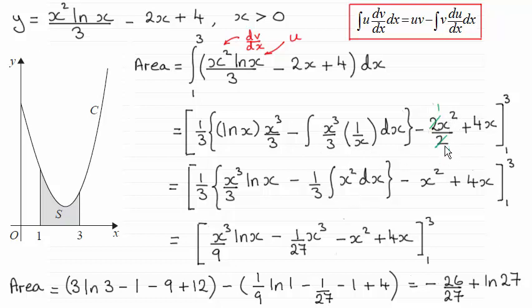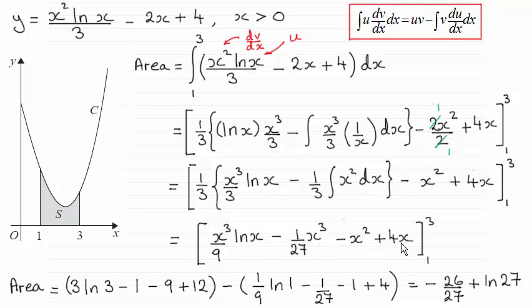Tidying up this term gives minus x squared, then plus 4x. Next, I've multiplied through with the third: this term gives x cubed natural log of x over 9. Integrating x squared gives x cubed over 3; times a third gives x cubed over 9; and times this third gives x cubed over 27, or 1/27 x cubed. Then we've got the last two terms.